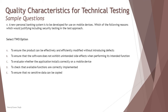There's just a hairline gap between options A and B — effective and efficient modification without introducing defects is maintainability, while unintended side effects relates to security as a functional-side approach. Option C — evaluating whether the application installs correctly on a mobile device — is installability testing, not security testing. Option D — checking that available functions are correctly implemented — is functional confirmation testing and not relevant here. Option E — to ensure that no sensitive data can be copied — is clearly a key security parameter.